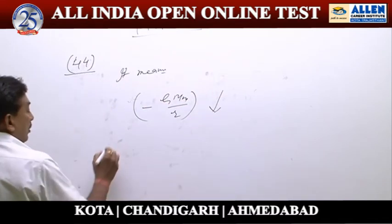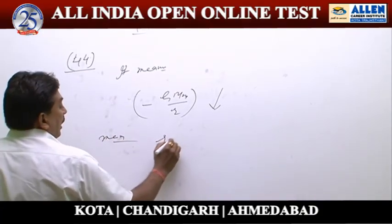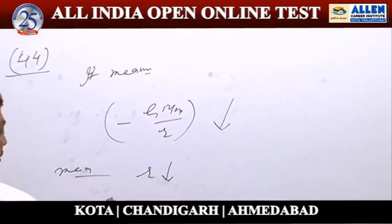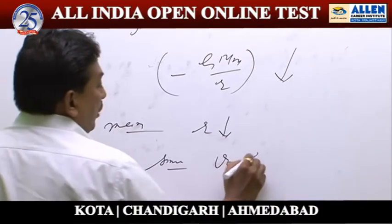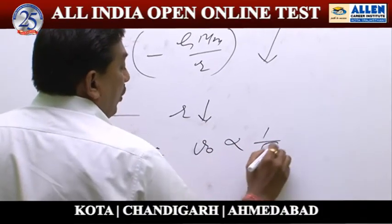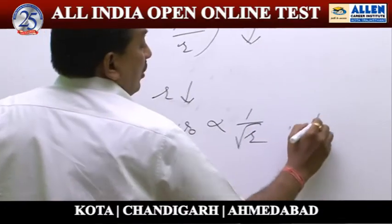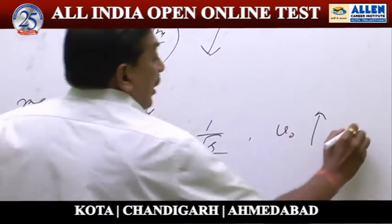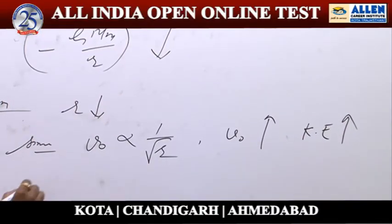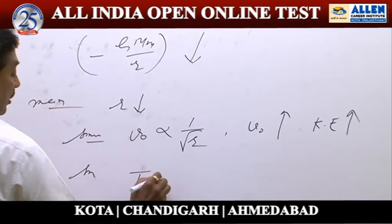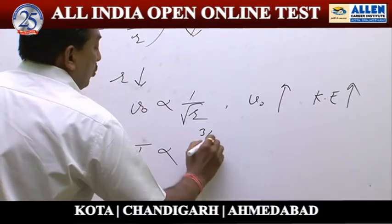Since orbital velocity V₀ is directly proportional to 1/√R, if R is decreasing, V₀ will increase and therefore kinetic energy increases. Since the time period T is directly proportional to R^(3/2) and R is decreasing,